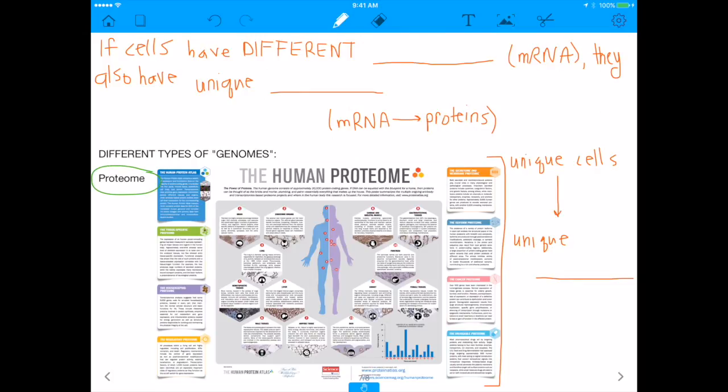But the proteome is going to make a lot more sense because if cells have different transcriptomes, which I told you they do because they have different mRNAs, and they have different transcriptomes because they have different epigenomes, then they also have unique proteomes because proteomes are basically the entire class of proteins that a certain cell makes. And in this case, if you're already making different types of mRNA in each cell, like if you're a heart cell, you'll transcribe certain transcripts. If you're a muscle cell, you'll transcribe certain transcripts. That also means that you'll have a different proteome because you already have a different transcriptome.